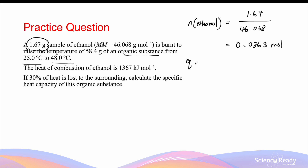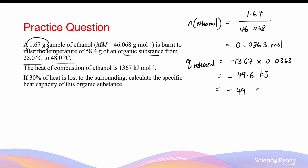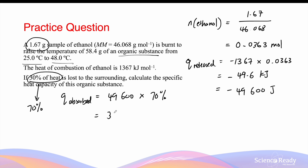We can then calculate the amount of energy released from the combustion by multiplying the molar enthalpy of combustion, which is 1,367 kilojoules per mole, multiplied by 0.0363 moles. This gives minus 49.6 kilojoules, which is equal to minus 49,600 joules of energy. If 30% of heat is lost to the surrounding, then 70% of heat is absorbed by the organic substance, which results in a temperature increase from 25 degrees to 48 degrees. The amount of energy absorbed can be calculated by multiplying 49,600 joules by 70%, which is equal to 34,700 joules of energy. Notice how when calculating the energy absorbed, I have gotten rid of the negative sign because a negative sign indicates that the energy has been released, so if I'm calculating the energy that's absorbed, I can take the same number but replace the negative sign with a positive sign.